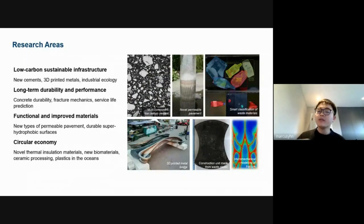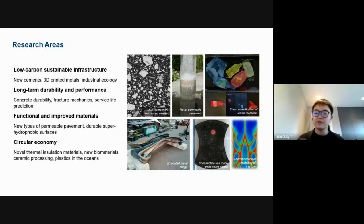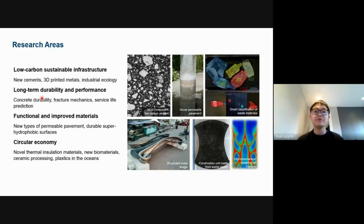Within the facility, we have around seven academics, ten postdocs and thirty PhD students working on different research areas related to infrastructure materials. Examples include new types of low carbon cement, new types of permeable pavement, and 3D printed metals. We also have people looking at turning waste — such as waste fibres into thermal insulation materials and waste plastics into construction units — trying to develop circular economies for the environment. People like me and Professor Hong Wong do research on the long-term durability and performance of infrastructure materials, which is very important for ensuring sustainability in the built environment.